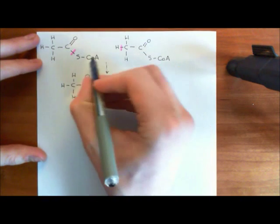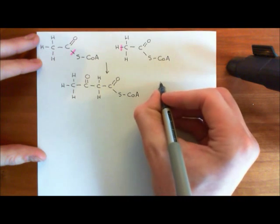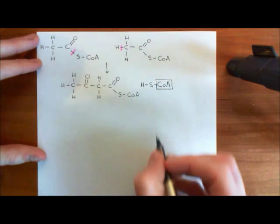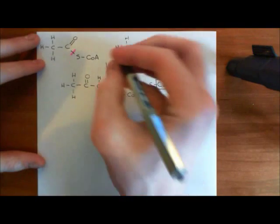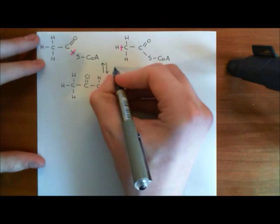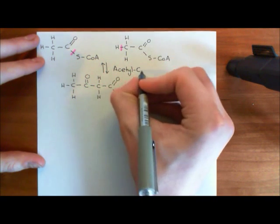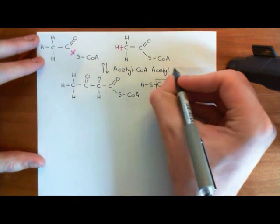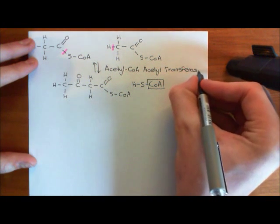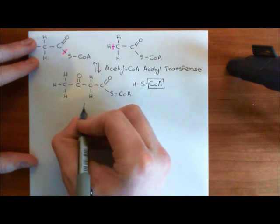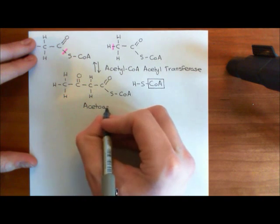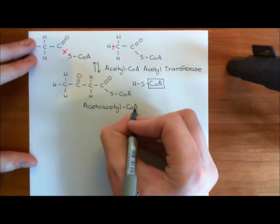The other thing we're going to produce in this reaction is binding this hydrogen atom to the sulfur atom to create back again an intact molecule of coenzyme A. Now this reaction is reversible, and it is catalyzed by an enzyme within the cytoplasm called acetyl coenzyme A acetyltransferase. The product here is known as acetoacetyl-CoA — because we've got an acetic acid group, that's the aceto group, bound to the acetyl-CoA. So this is acetoacetyl coenzyme A.